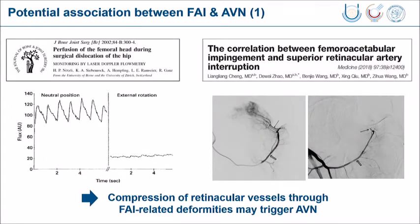There are several etiological explanations. Nezli did a study suggesting that forced external rotation, which decreases blood flow, can play a role. Other groups, including a Chinese group, also looked at blood flow and could see a significant reduction in extreme positions. So the theory that the retinacular vessels are compromised is one explanation for this association.